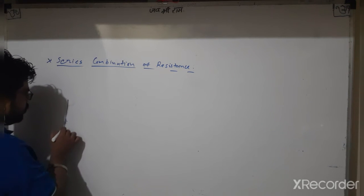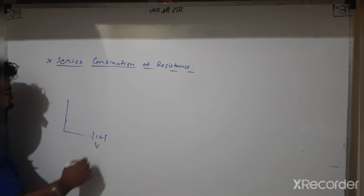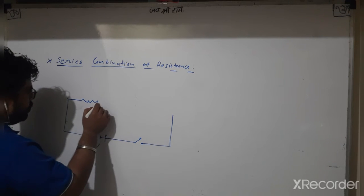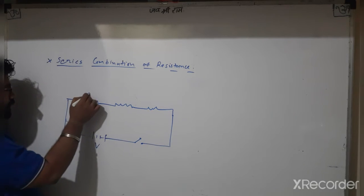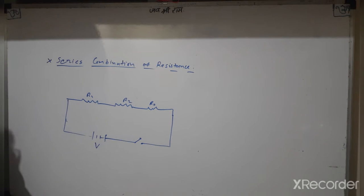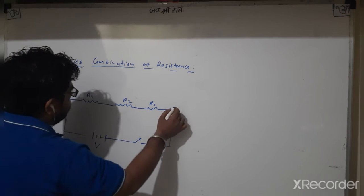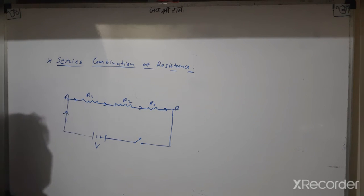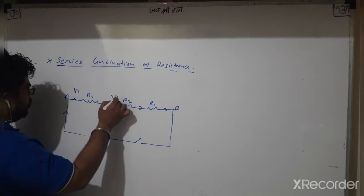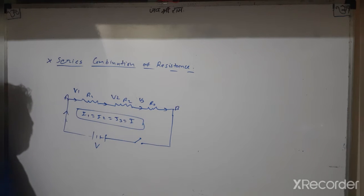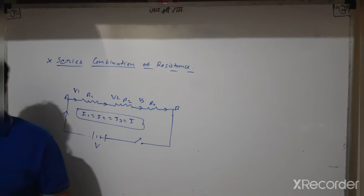Here it is a battery and a key or switch. They are connected in series combination of resistance — R1, R2 and R3 — between terminals A and B. When connected in series, electric current flows remain the same: I1 = I2 = I3 = I. But electric potential is different: V1, V2, and V3.